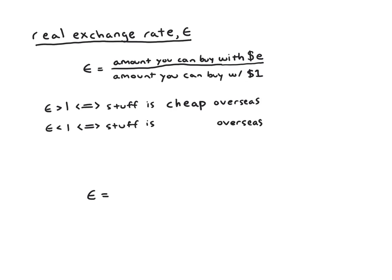If epsilon is less than one, it means the amount you can buy overseas is less than what you could get with a dollar in America. So you're probably not going to want to import much stuff or travel overseas. Things are expensive overseas.